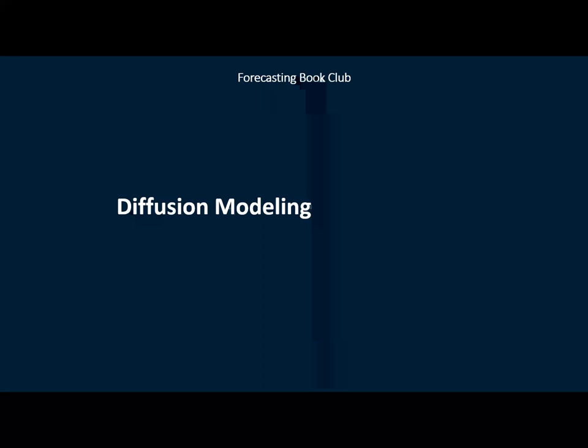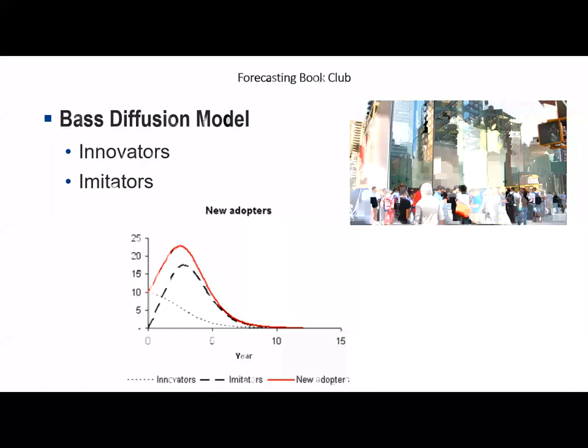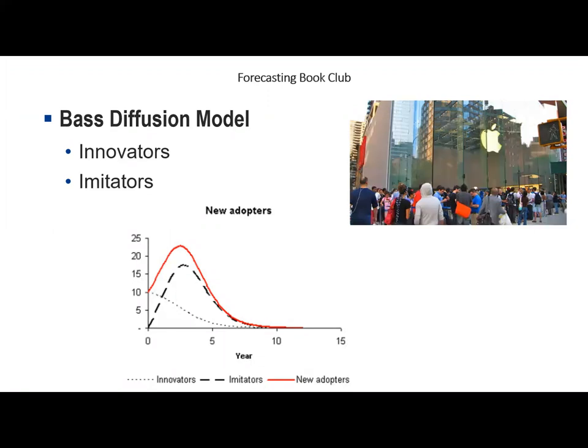Let's look at Paul's discussion of diffusion modeling. The Bass diffusion model is based on the expected behavior of two types of potential customers: innovators, who are keen to buy the product as soon as they hear about it without waiting for others' opinions, and imitators, who only buy after hearing about others' experiences, reducing their perceived risk. The Bass model accounts for both behaviors — showing innovators, imitators, and the combined total of new adopters over time.